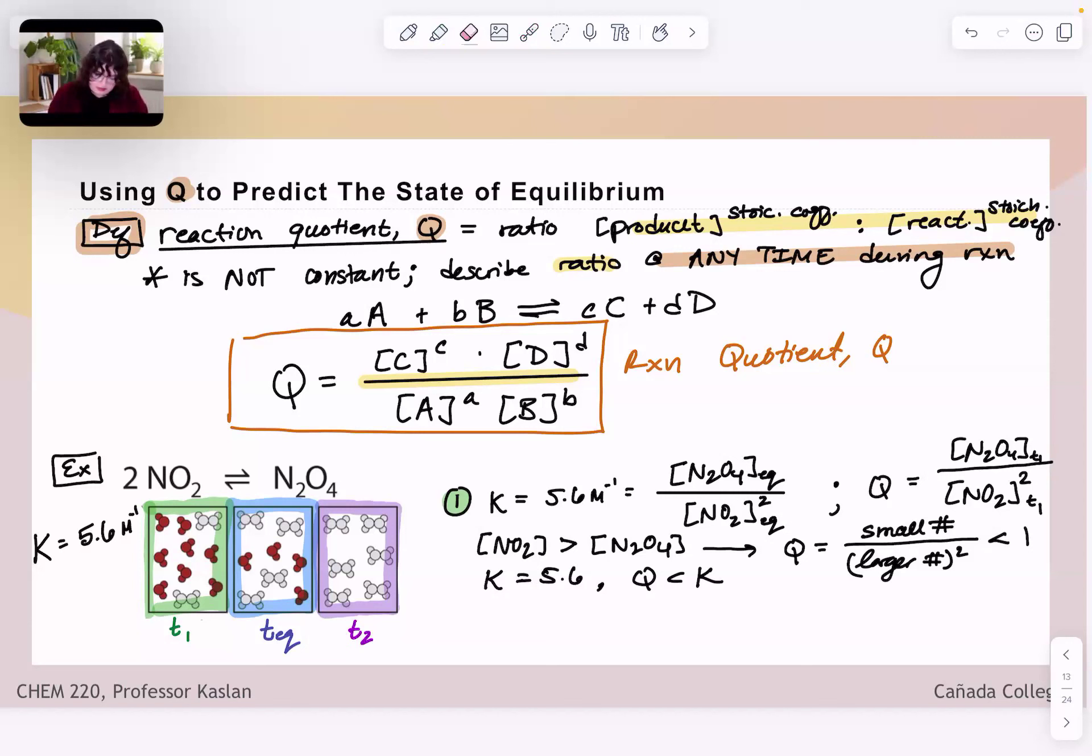So what does this mean if Q is less than K? How is our reaction going to shift so that it can establish an equilibrium? So what can I do to make this quotient increase? So I have two ways that I can make a fraction increase. I can either increase the numerator or I can decrease the denominator.